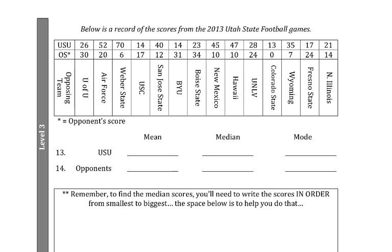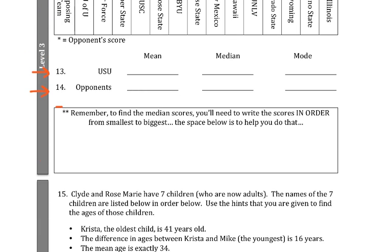Alright, now level 3. These are scores from the 2013 Utah State football games — maybe next year I'll update them. On the top you're going to see the USU score, and on the bottom you're going to see the opponent's score. For question 13, you need to find the mean, median, and mode of USU's scores, and then the mean, median, and mode for the opponent's scores. Remember, I've got this big box here as a reminder that you need to put the numbers in order.